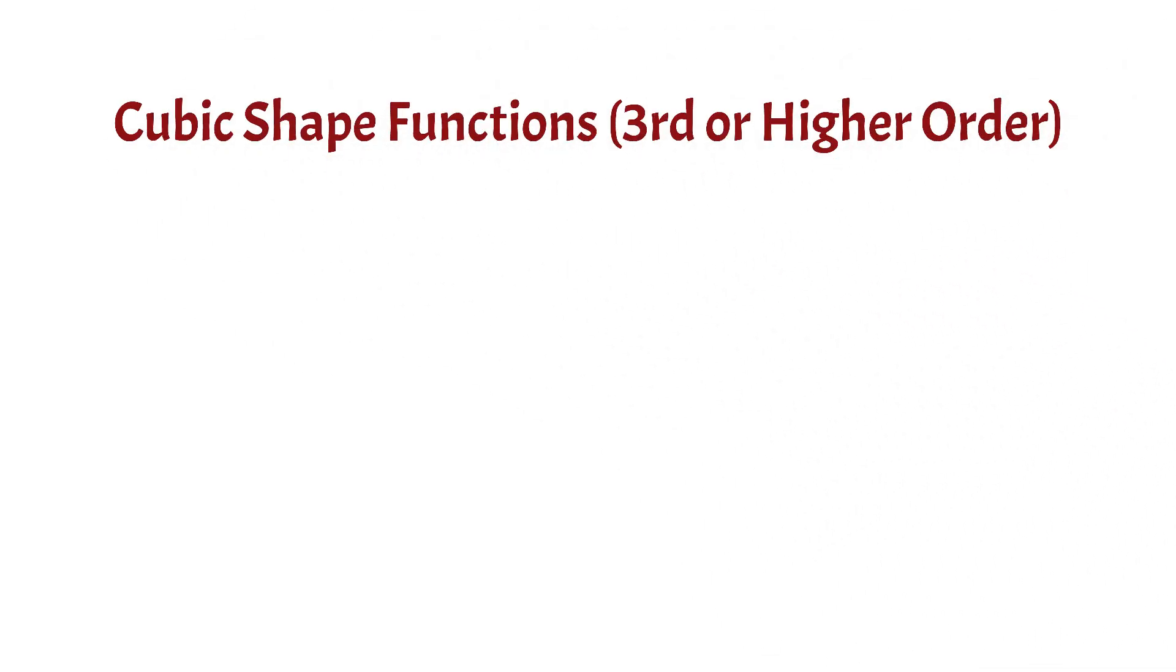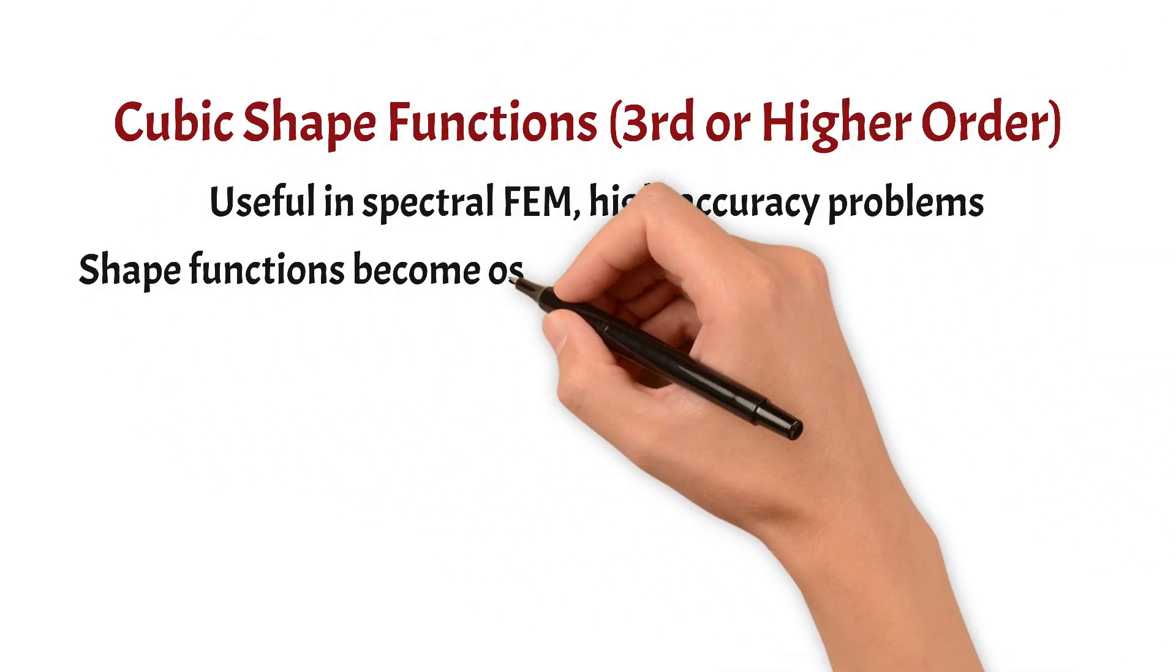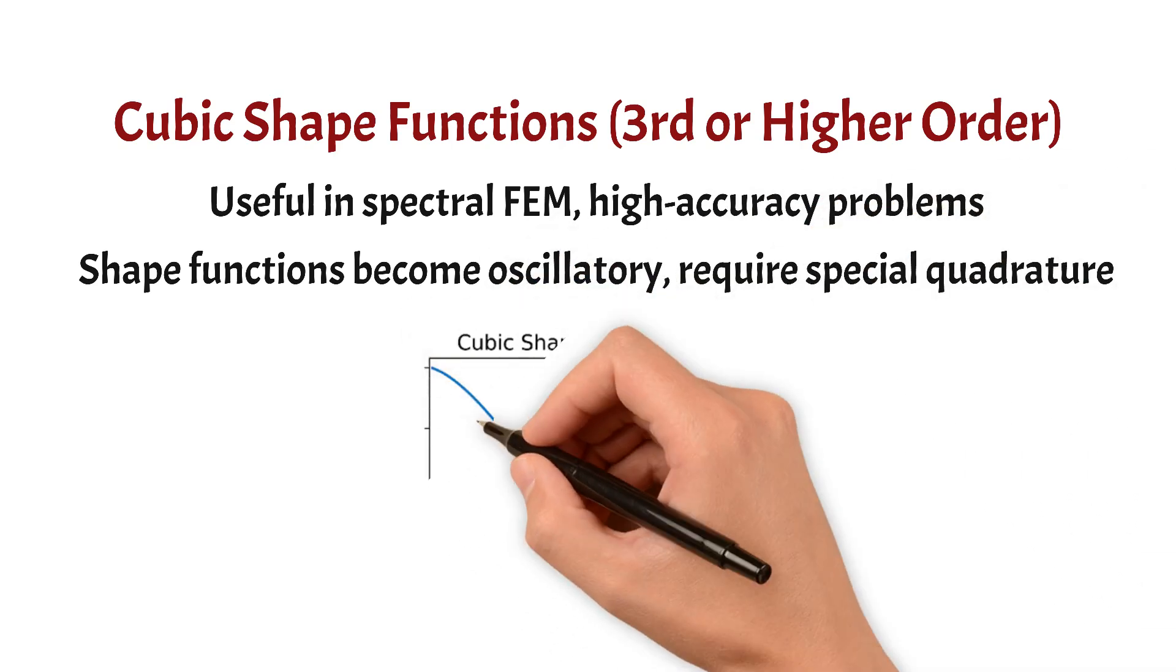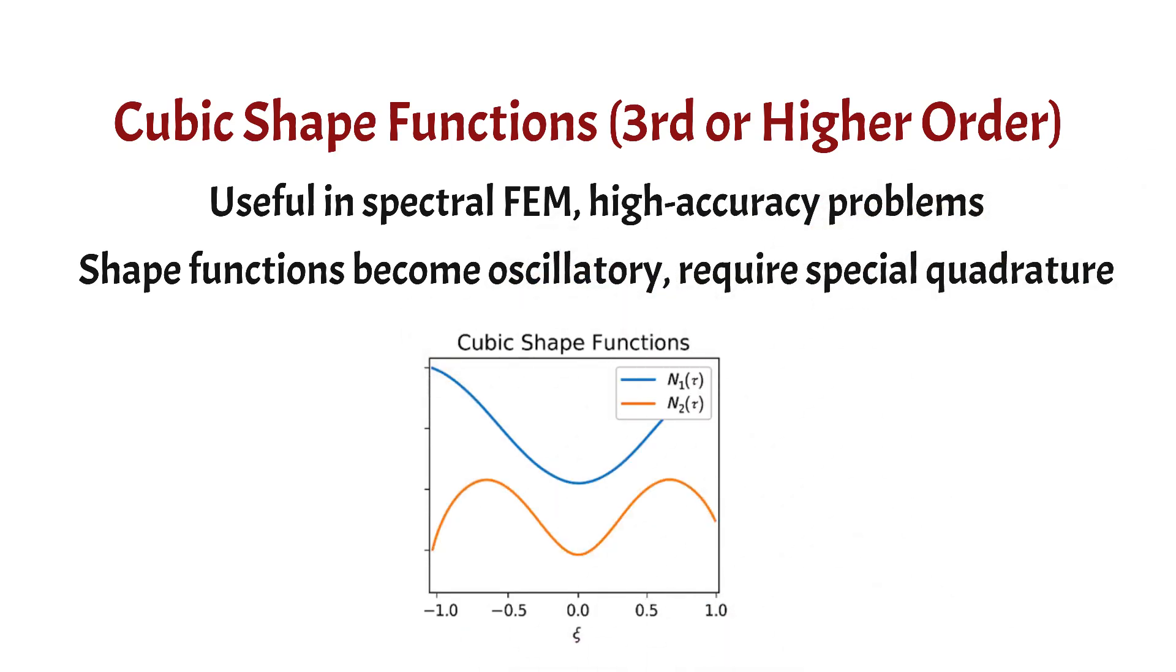Next up, cubic shape functions. They're also known as third or higher order shape functions. They're especially useful in spectral finite element methods and problems that require very high accuracy. As the order increases, the shape functions start to show oscillatory behavior, like the ones you see here in the plot.